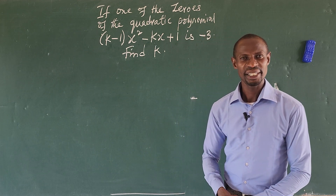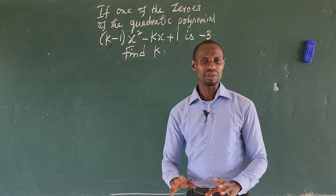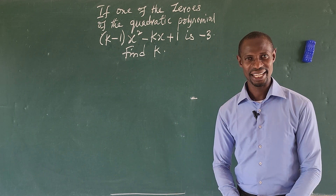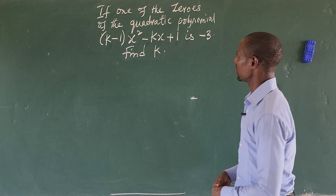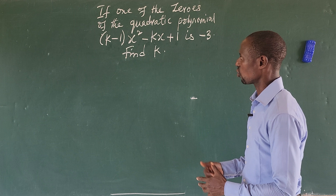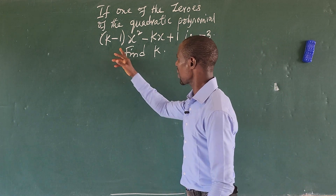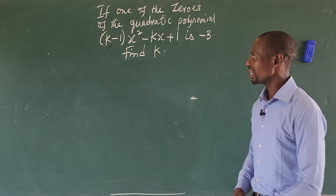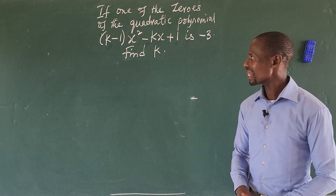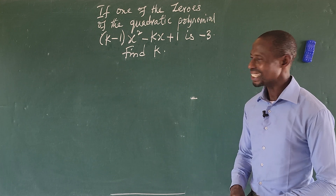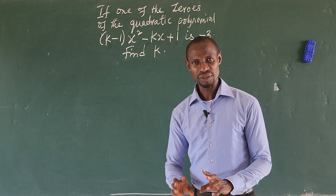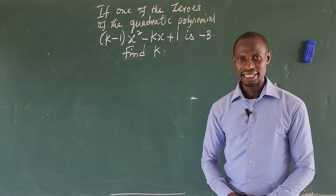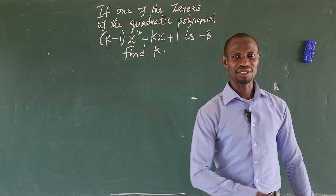Hello, my wonderful people. Here is another beautiful day to explore the world of mathematics. We have a question before us. It says, if one of the zeros of the quadratic polynomial (k minus 1) times x squared minus kx plus 1 is minus 3, then we are asked to find the value of k.